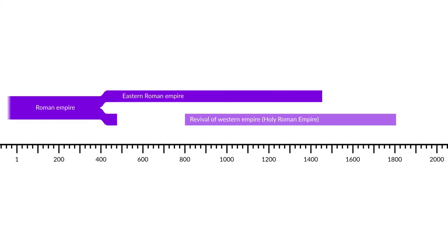It continued on at first through the Carolingian dynasty — the descendants of Charlemagne. And then after that, the position of emperor in the West passed on to other dynasties over the centuries. It eventually ended up with the Habsburgs, who were the last dynasty to hold the title of Western Roman Emperor. And from 1556 onward, they were based in Vienna.